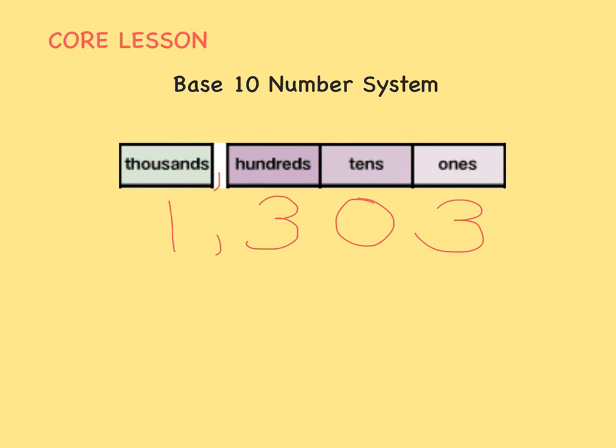Let's look at the number 1,303. I noticed that the digit in the ones place is the same as the digit in the hundreds place. They are both 3s, but do they have the same value? Of course not! The digit 3 in the ones place represents 3 units, or just 3.